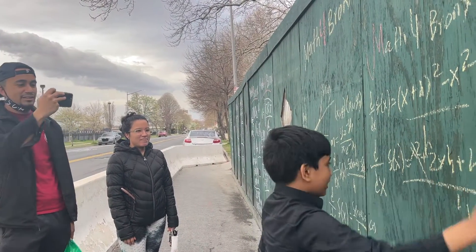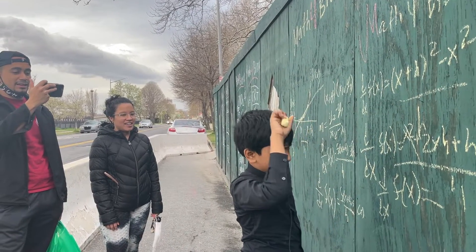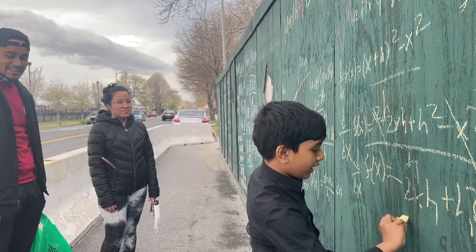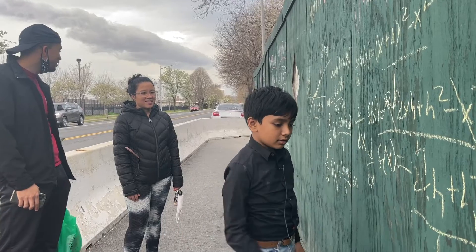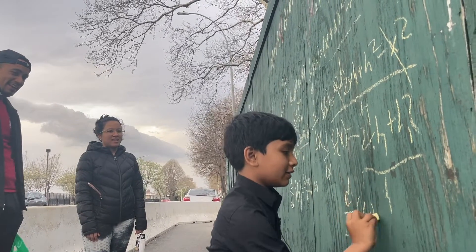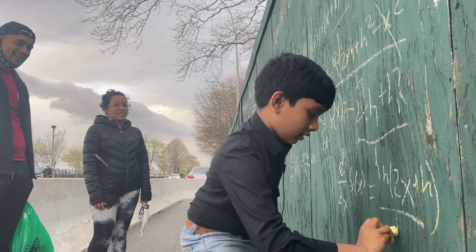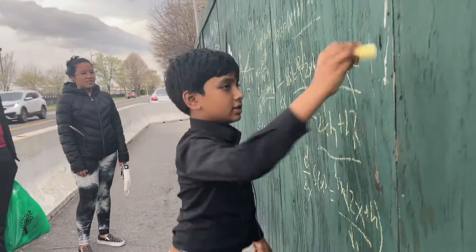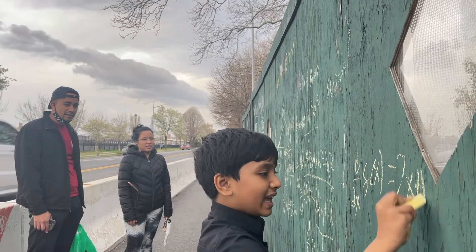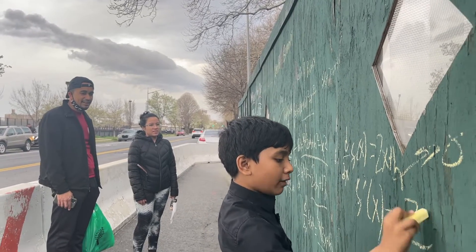After canceling the x squared terms, we're left with 2xh plus h squared over h. We factor out h from the numerator, giving us h times the quantity 2x plus h, over h. Those h's cancel out, leaving d over dx of f of x equals 2x plus h. Since h is approaching zero, we set it to zero, giving us f prime of x — the derivative of x squared — equals 2x. That's the definition of the derivative.